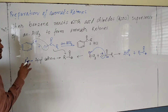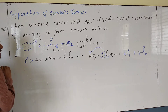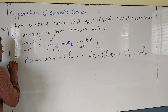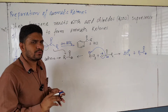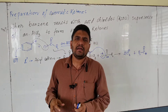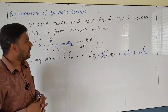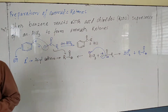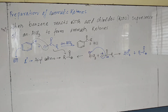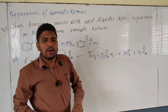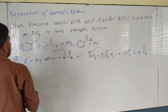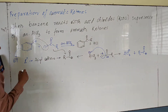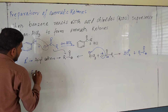The electrophile attacks the benzene ring because the electrophile is an electron-deficient center, while benzene is electron-rich — it contains six pi electrons. So electrophilic substitution in the case of benzene is straightforward. This reaction was proposed by the scientist Friedel and Crafts, which is why it is known as Friedel-Crafts acylation.